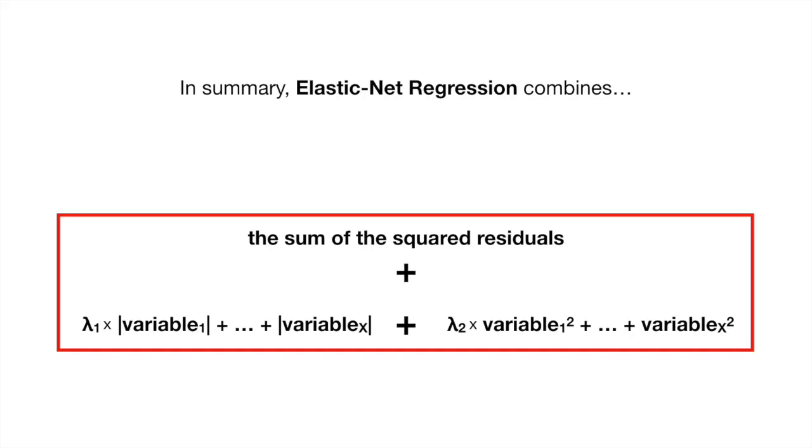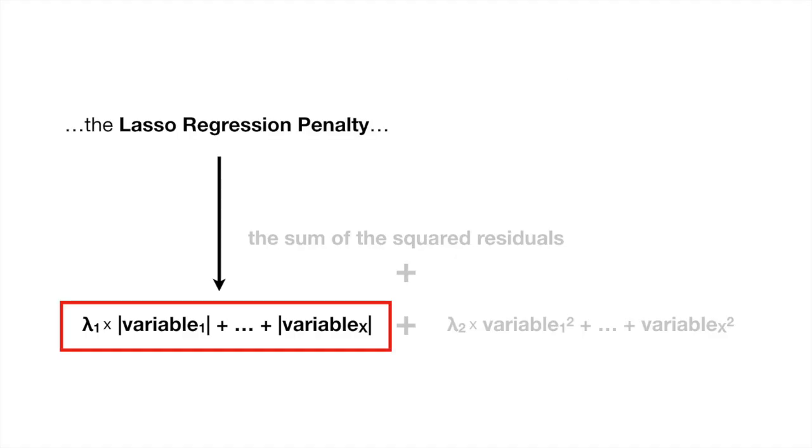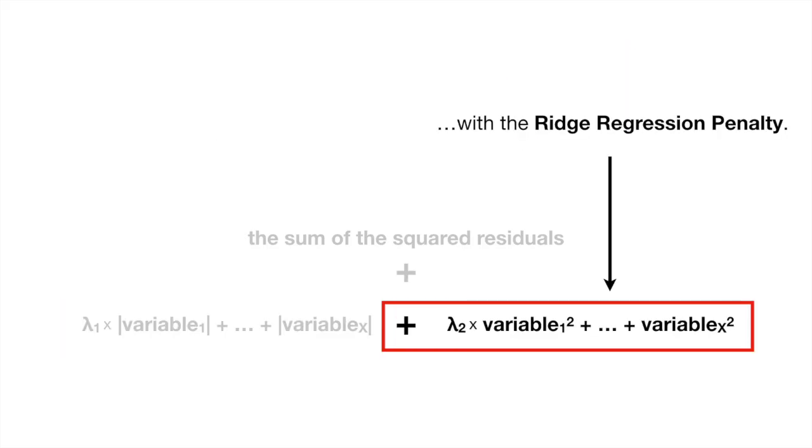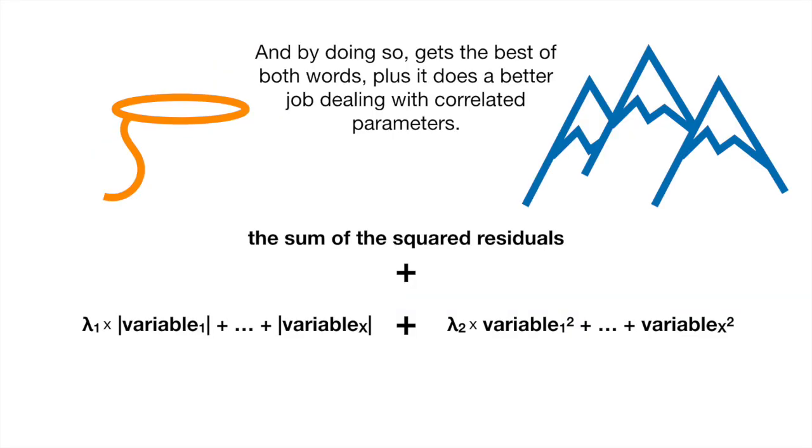In summary, Elastic Net Regression combines the Lasso Regression penalty with the Ridge Regression penalty, and by doing so, gets the best of both worlds. Plus, it does a better job dealing with correlated parameters. Hooray!